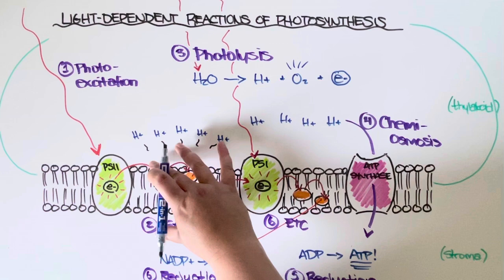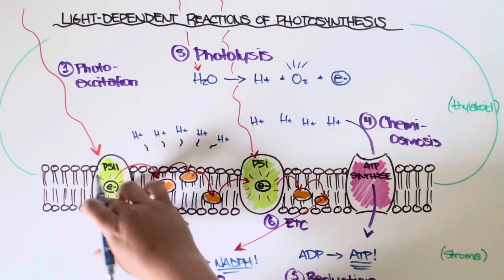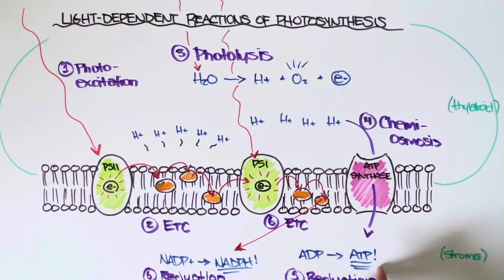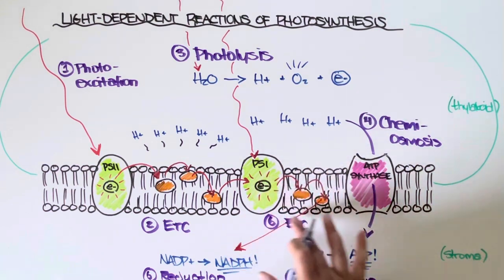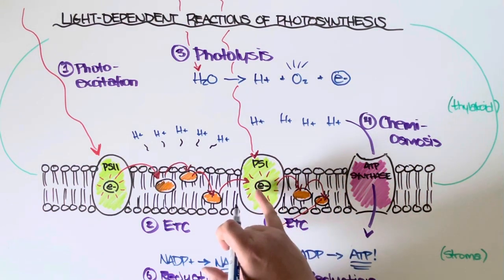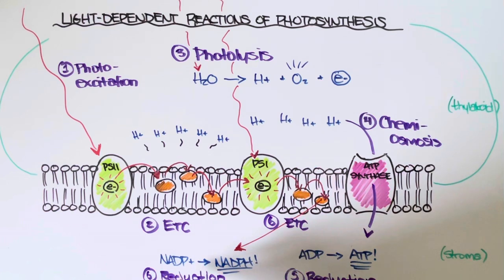Our first electron transport chain derived from photosystem II, its job is to make ATP. Our second electron transport chain derived from photosystem I, its job is to make NADPH. And once we have both of those molecules, then we can go on to the second set of reactions called the light independent reactions, which you can check out in our next video.